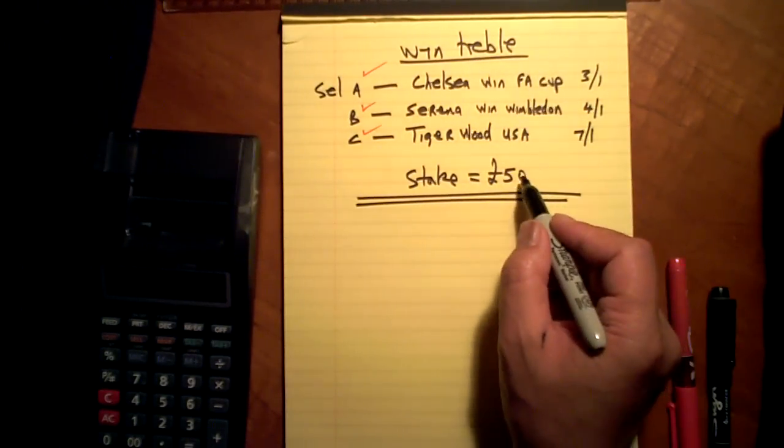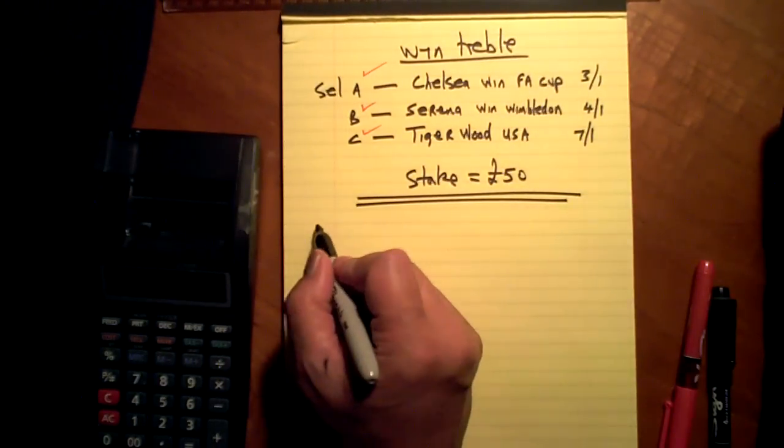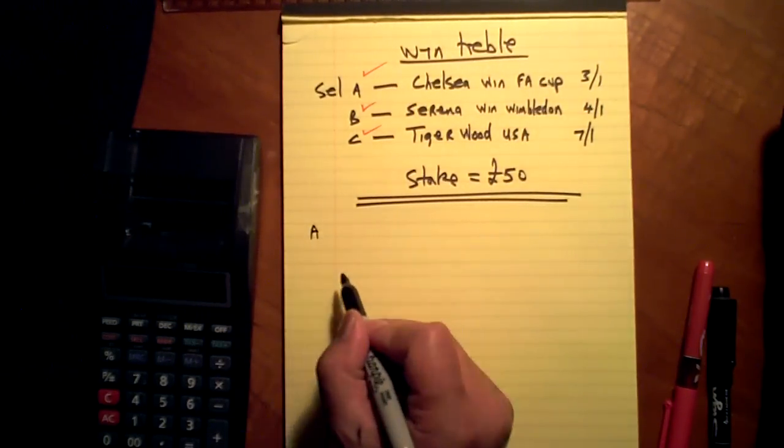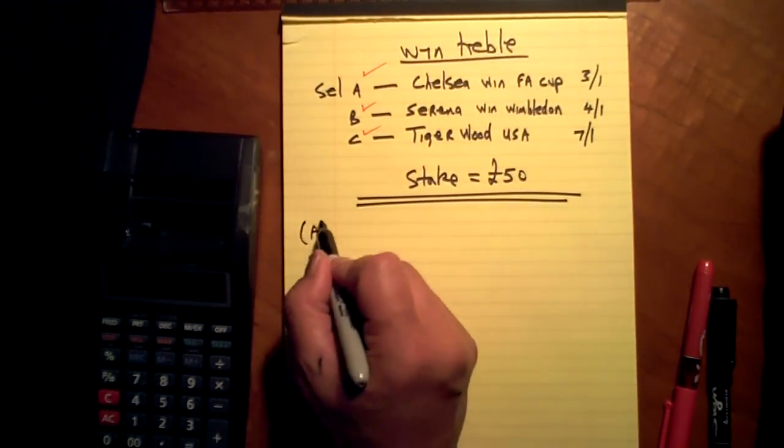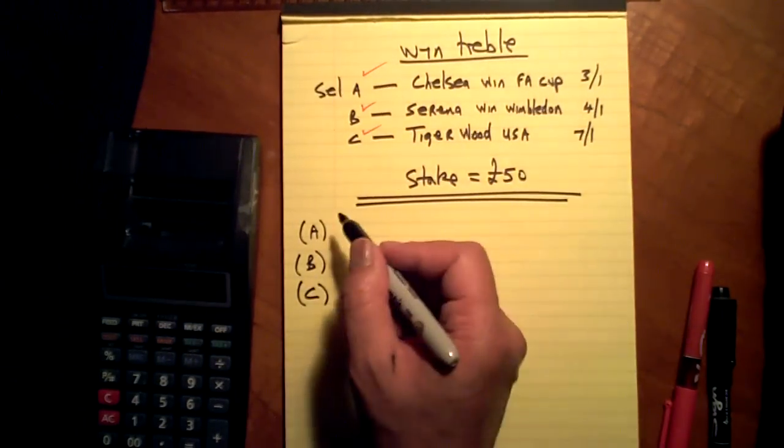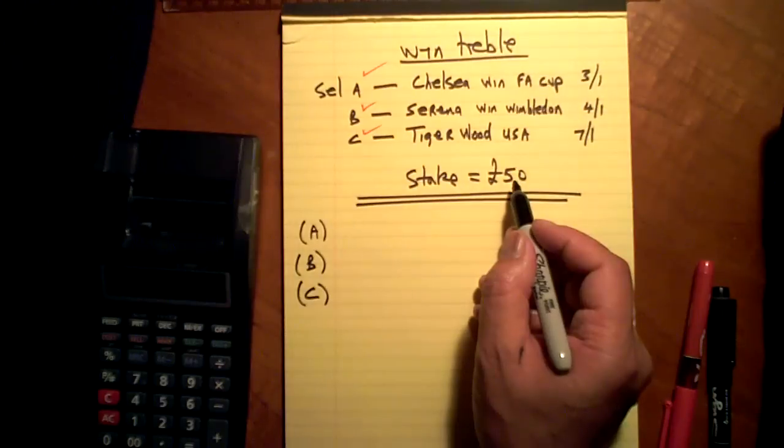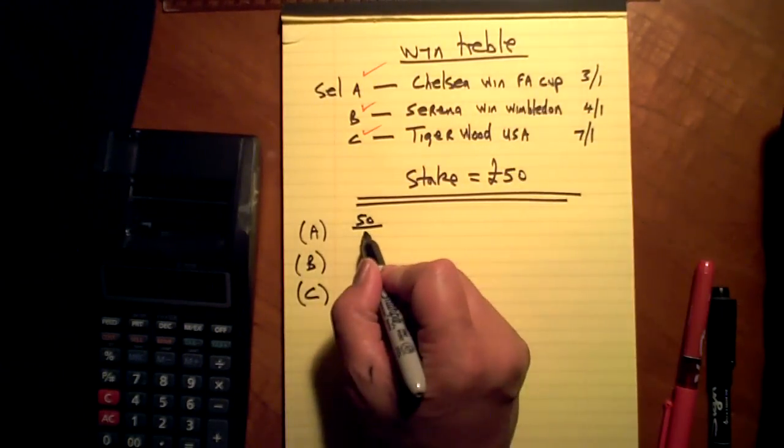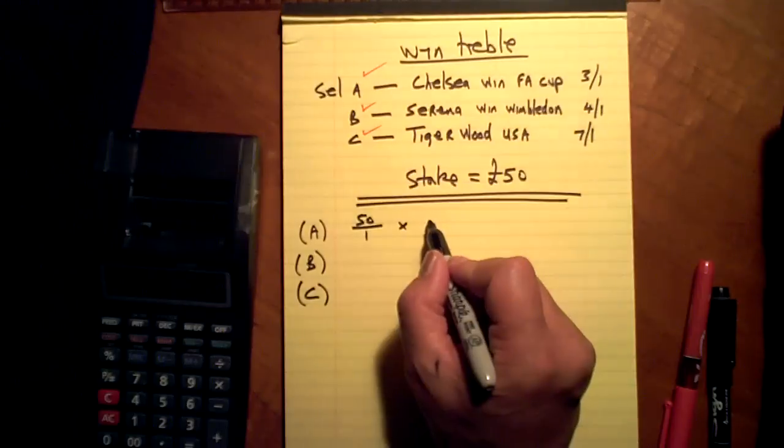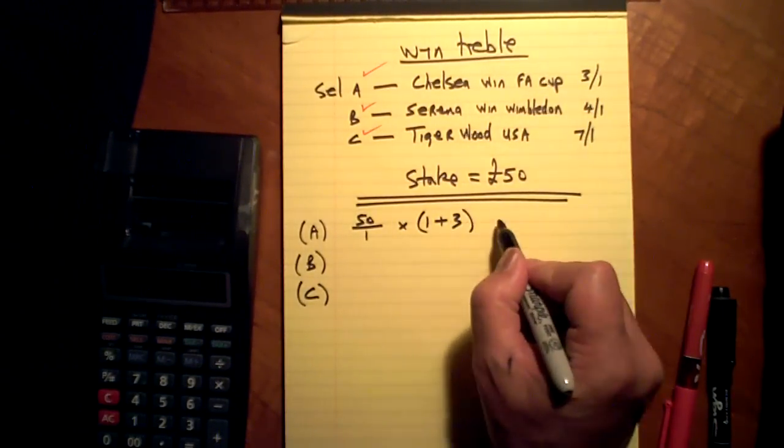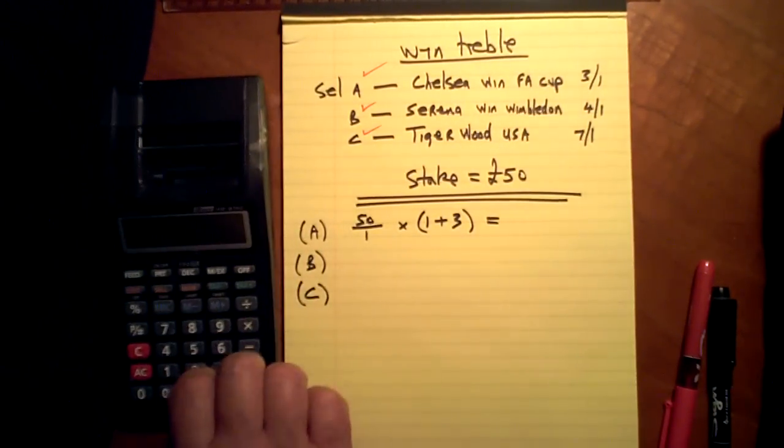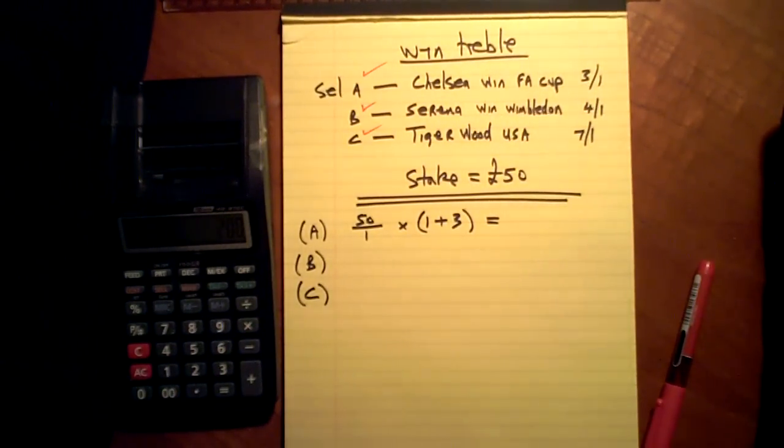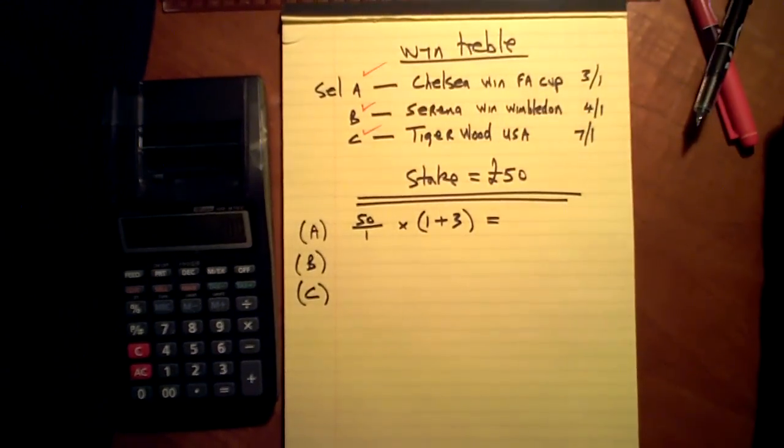This is how much I win. £50 on that, into that, into that. It's a win treble, so there are three steps. Step A, step B, step C, or if you like, one, two, three. My 50 pounds, which I coughed up in the beginning, divide by one, the bottom bit, times bottom bit plus top bit, equals 50 divide one times four, 200 pounds.